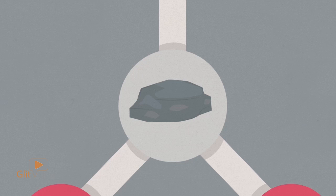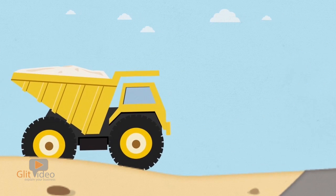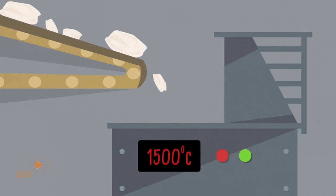The main ingredient in cement is limestone. Limestone is mined from a quarry and shipped to a cement plant where it is heated to 1500 degrees.